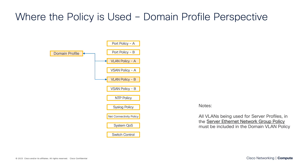As with all IMM Expert Series videos, I like to include a slide that graphically portrays where the policy is used to provide context. In this case, the domain profile directly accesses the VLAN policy. You can have a single VLAN policy since your VLANs likely are going to be the same for fabric A and fabric B. Or, if you choose to only touch one fabric at a time, you can have a VLAN policy for fabric A and one for fabric B, deploying to fabric A first and then fabric B — a non-disruptive change.